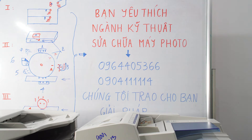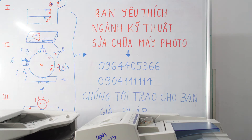Xin chào anh chị và các bạn đang làm trong lĩnh vực kỹ thuật sửa chữa máy photo. Chúng ta biết rằng 80% những lỗi hư hỏng, những sự cố xảy ra trên máy photo trong quá trình vận hành sẽ nằm ở cấu tạo cơ khí, nguyên lý hoạt động, những hao mòn vật tư, những yếu tố chủ quan và khách quan dẫn tới tình trạng những căn bệnh mà máy photo của chúng ta gặp phải trong quá trình sử dụng.